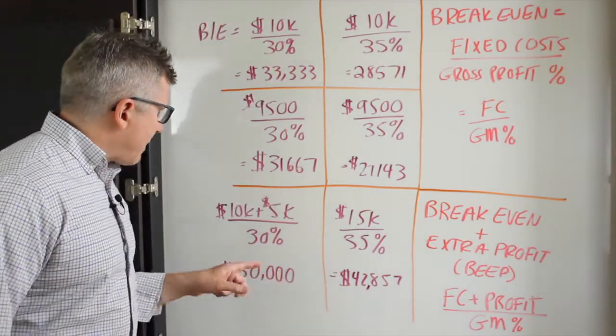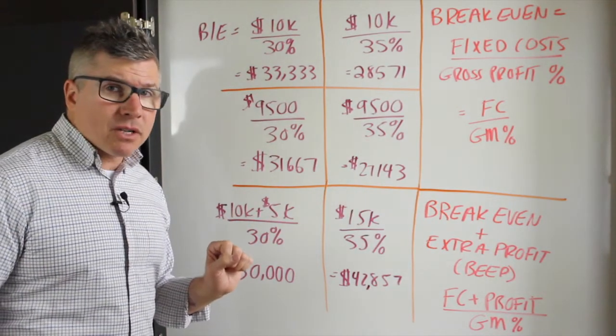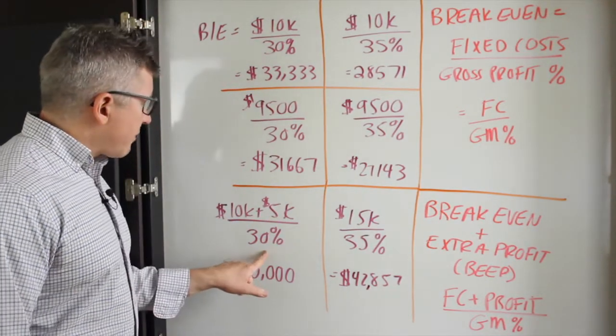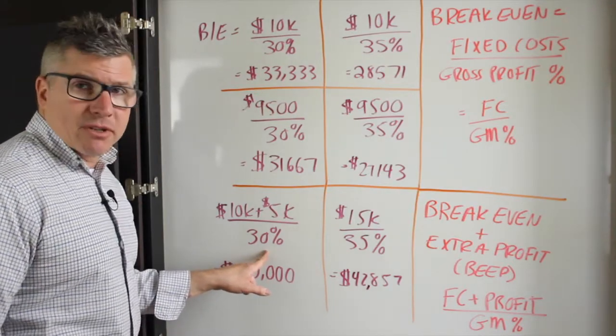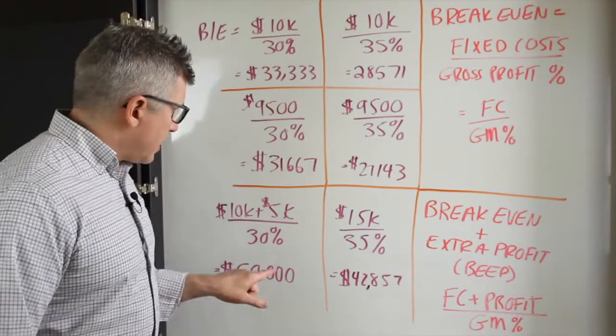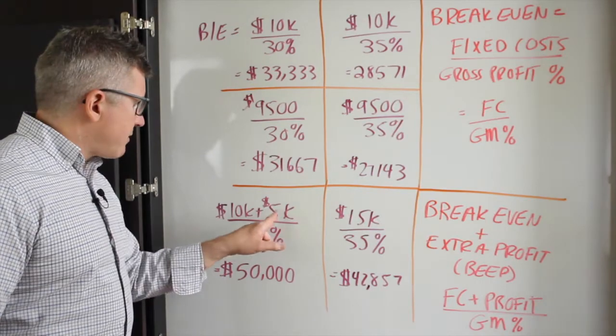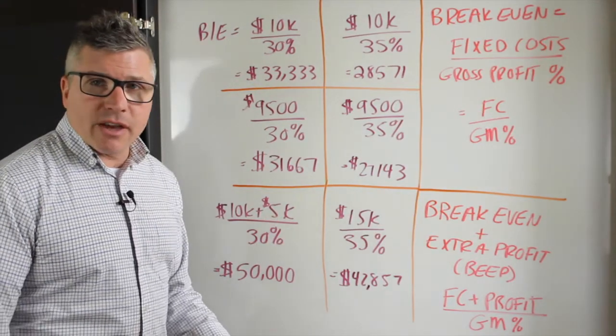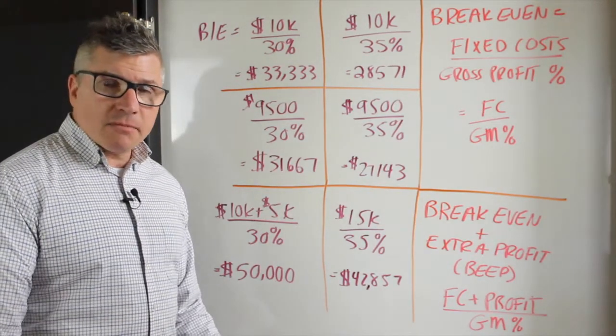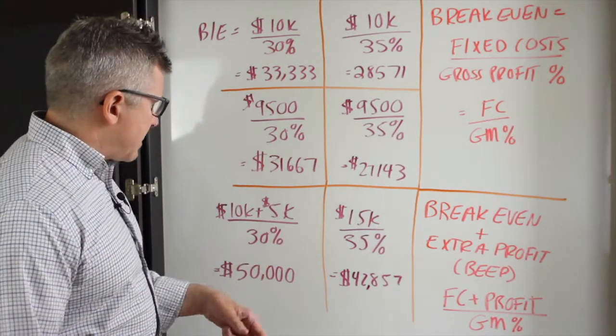So if we plug some numbers in, let's say we're back to our $10,000 fixed cost, and we want to have an additional $5,000 of profit in the month. And we have our prior profit margin of 30%. We have $10,000 plus $5,000, that's $15,000 divided by 30%, which gives us $50,000. So to earn the extra $5,000, we just have to sell $50,000. Make sense? Because we are only keeping 30 cents out of every dollar.